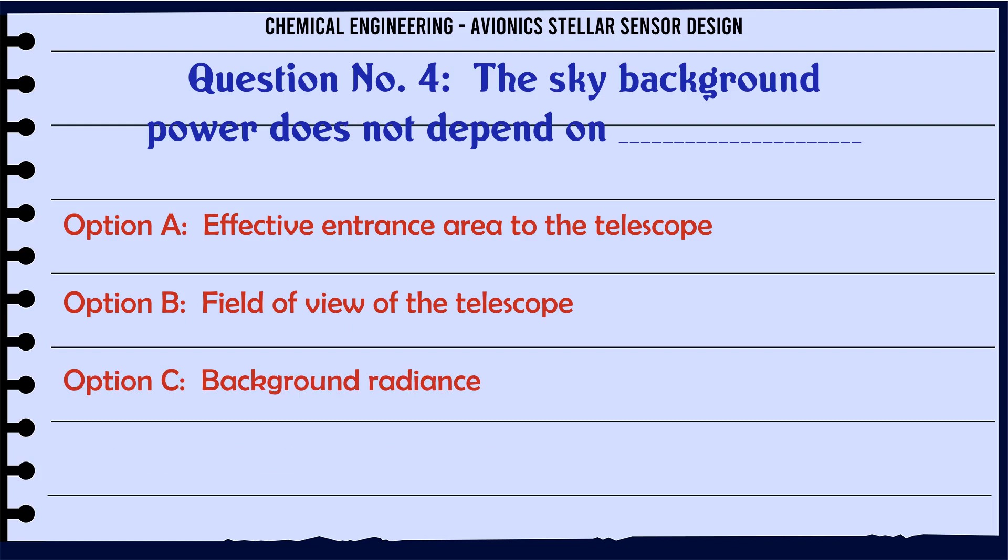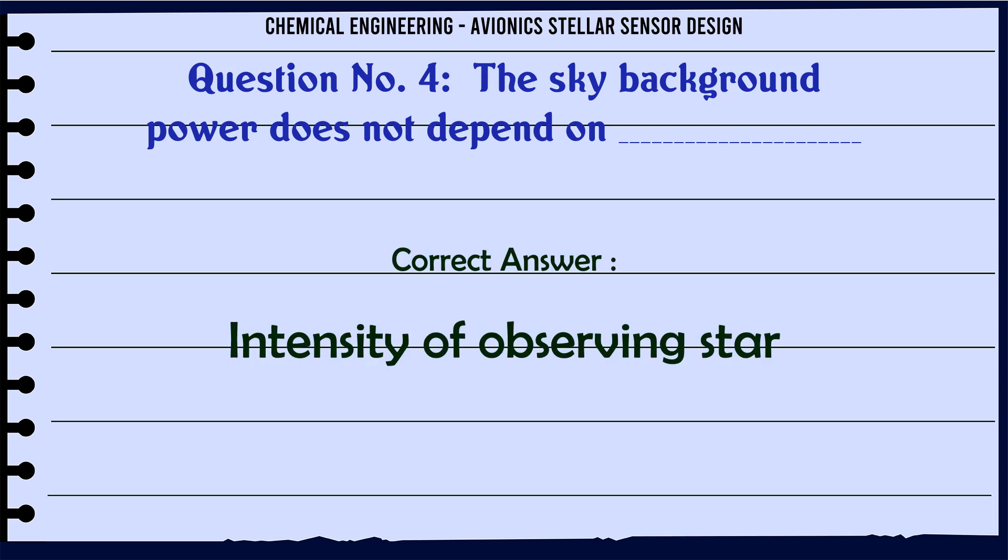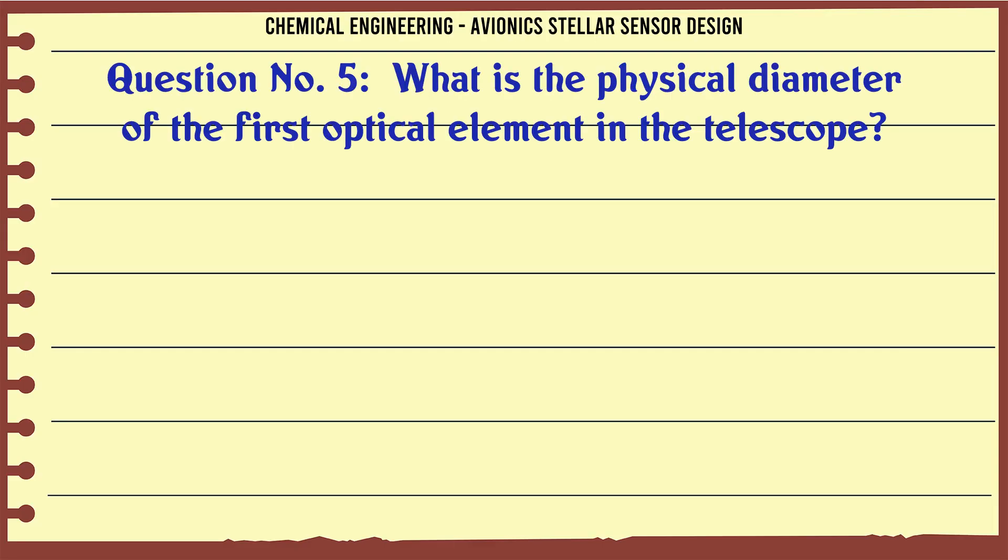The sky background power does not depend on: A. Effective entrance area to the telescope, B. Field of view of the telescope, C. Background radiance, D. Intensity of observing star. The correct answer is Intensity of observing star.